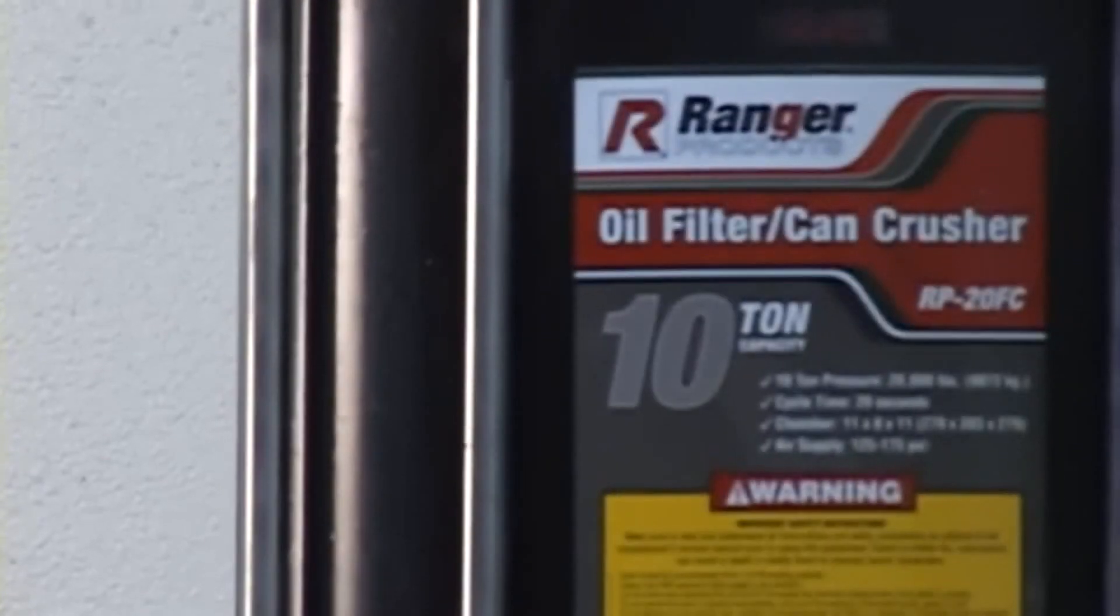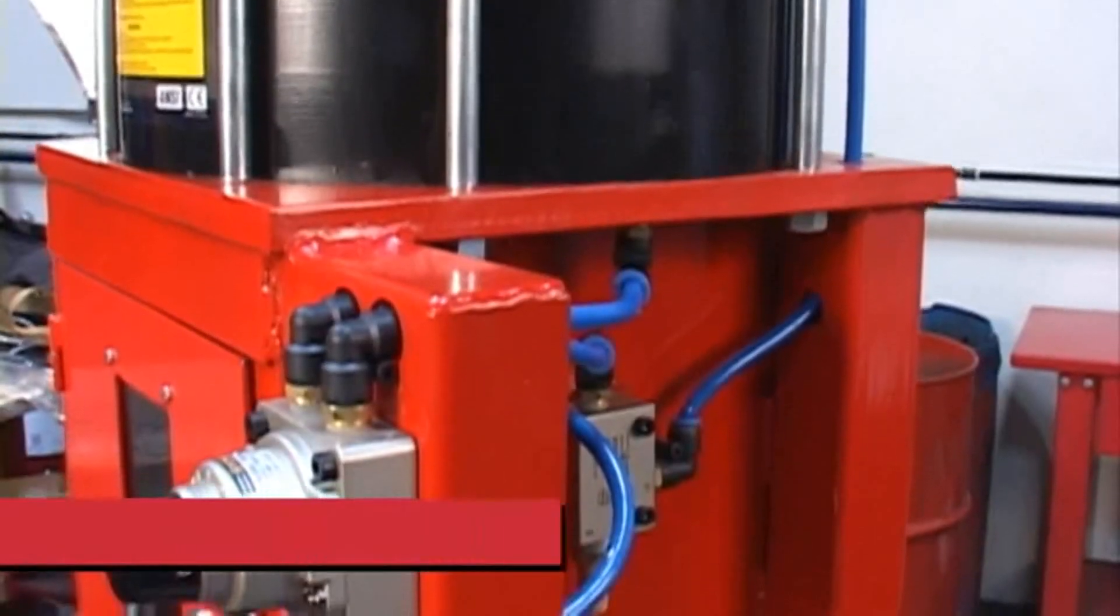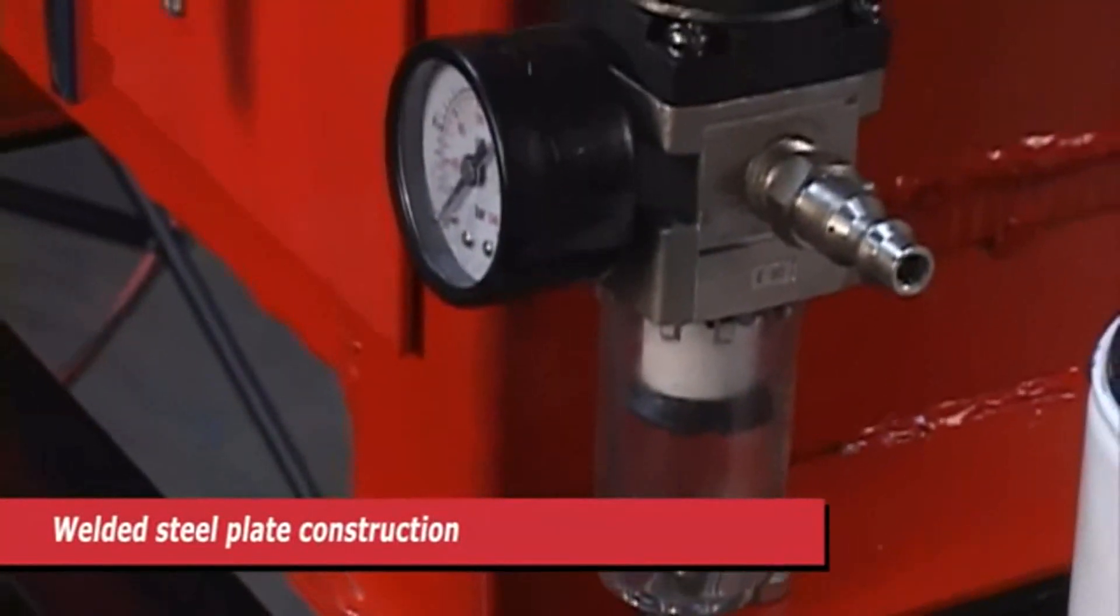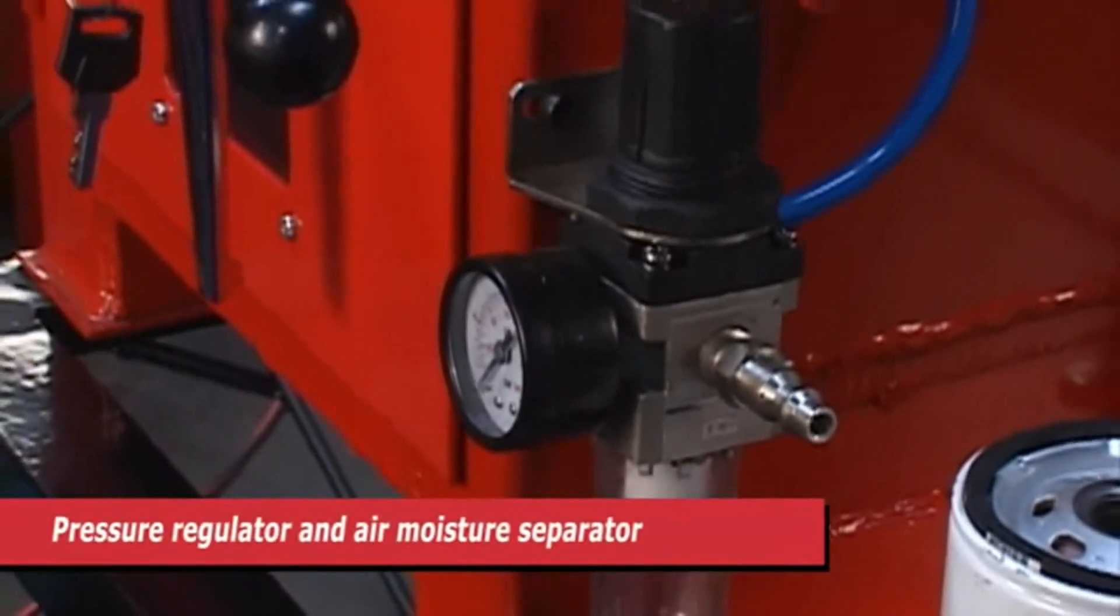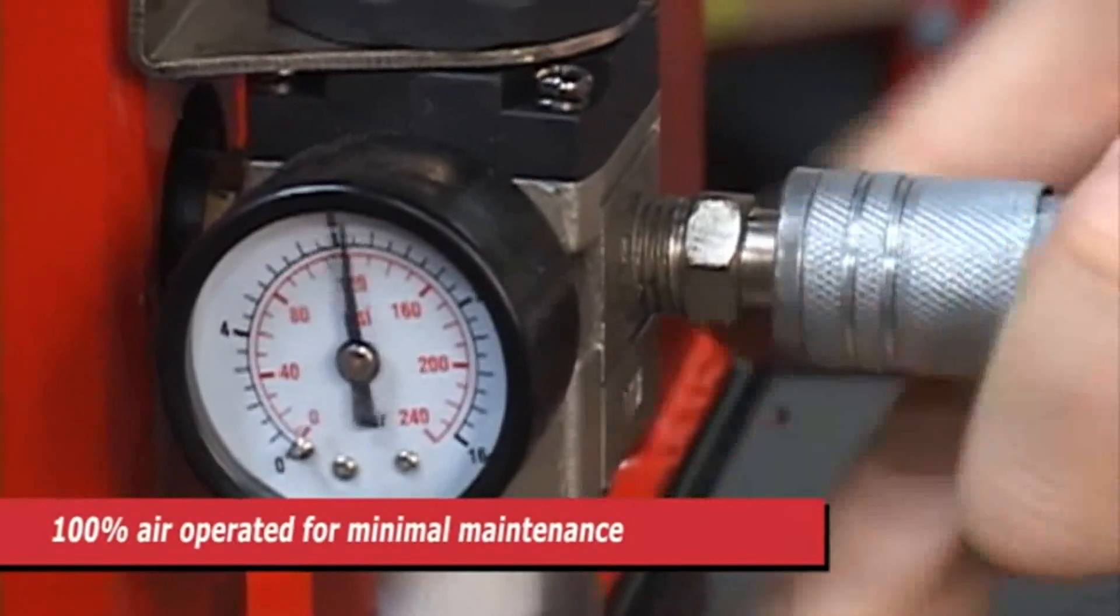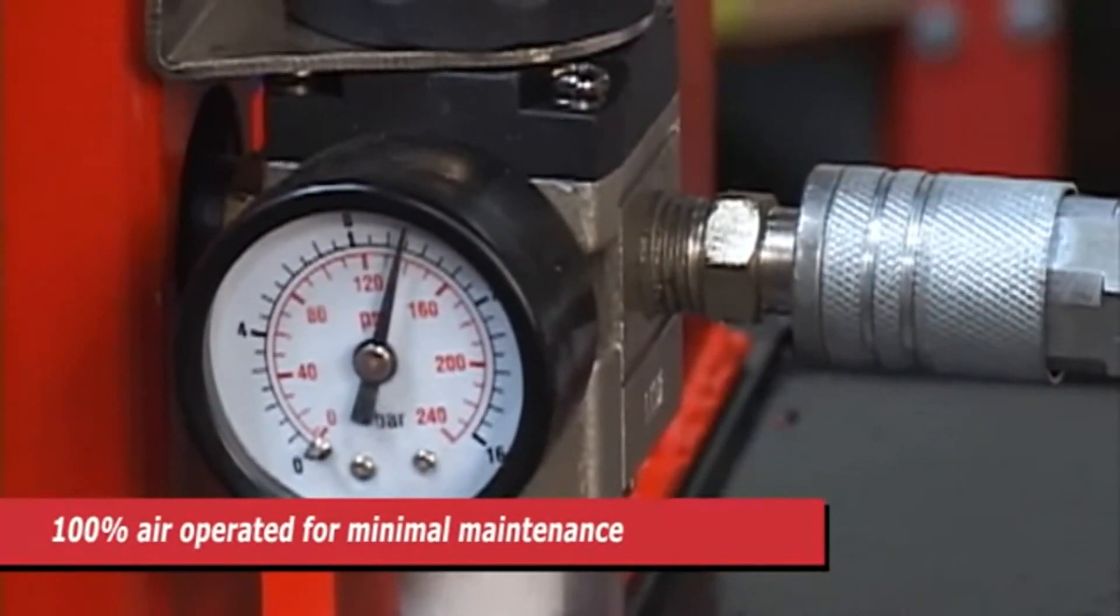Introducing the new Ranger RP20FC Oil Filter Can Crusher. We built the Ranger RP20FC out of durable welded steel plate to withstand incredible forces and equipped it with a pressure regulator and air moisture separator. So not only is the entire system 100% air operated, but it also requires very little maintenance.